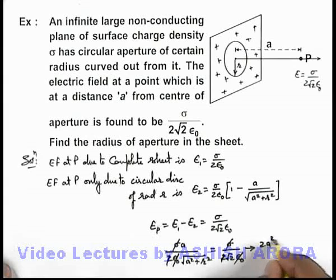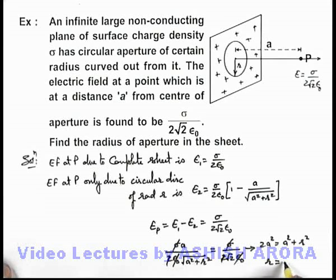2 'a' square is equal to 'a' square plus r square, which implies the radius of this section which is carved out is equal to 'a'. That will be the answer to this problem.